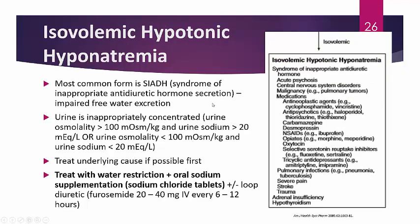The next type is isovolemic hypotonic hyponatremia, the main form being SIADH — syndrome of inappropriate antidiuretic hormone secretion. Excessive ADH secretion prevents diuresis of water, keeping water retained in the body. This doesn't cause a major volume change but creates a dilutional effect, making the patient hypotonic.